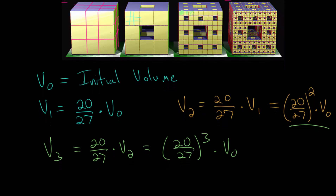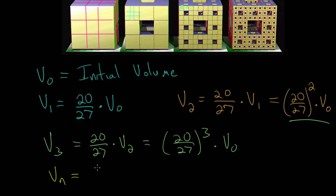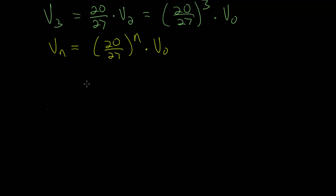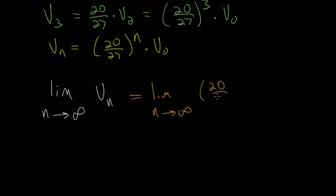We can generalize this: the volume at the nth stage is (20/27)ⁿ multiplied by the initial volume. We just need to ask what happens as the number of steps approaches infinity — what happens as n gets bigger and bigger? We can use the language of calculus to help answer this question. We take the limit as n approaches infinity of vₙ, which equals the limit as n approaches infinity of (20/27)ⁿ times the initial volume. The initial volume is a constant — a fixed number that doesn't change as n gets bigger.